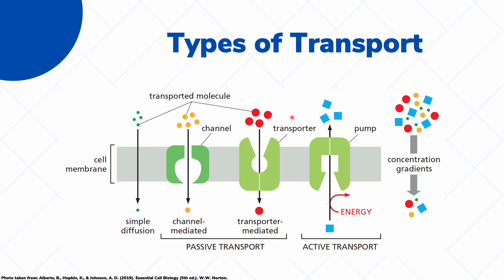On the other hand, you also have active transport, which moves molecules against their concentration gradient — from less concentrated areas to more concentrated areas. Since molecules normally do not move this way, the cell has to expend energy to pump these molecules. That's why the active transport proteins are called pumps.